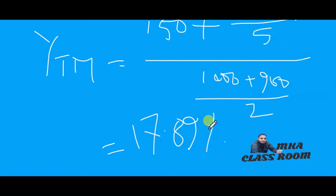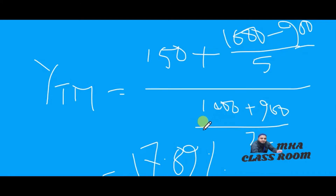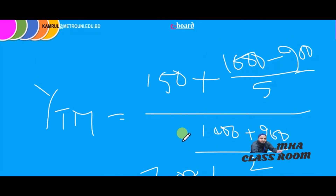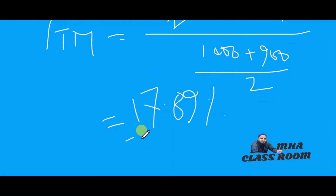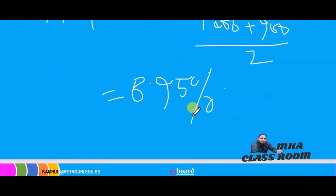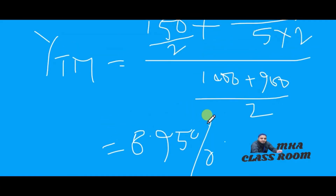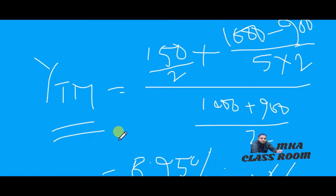By calculation, our YTM value should be 17.89 percent. Now for another question: if this bond is a semi-annual bond where it pays interest semi-annually, we divide the coupon by 2 and multiply N by 2. The result is approximately 8.95 percent semi-annual YTM. In this way we can calculate YTM.